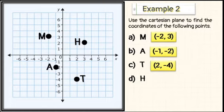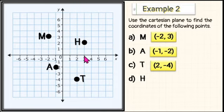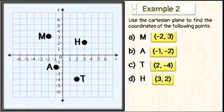Point H is in quadrant 1. The point is located 3 units to the right of the y-axis and 2 units above the x-axis. Hence, the coordinates of point H are (3, 2).